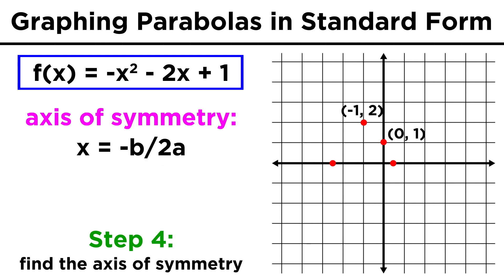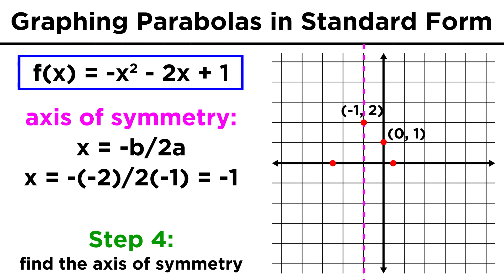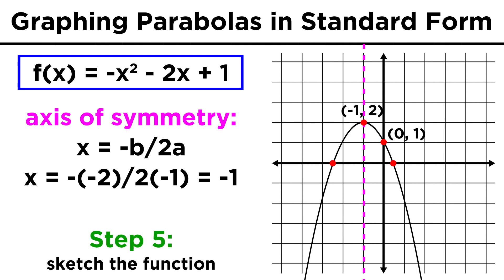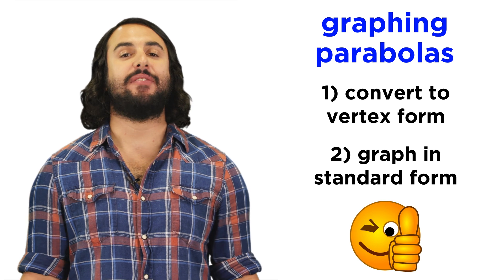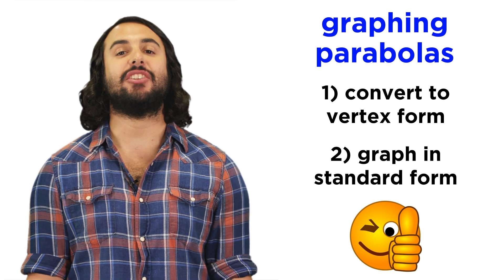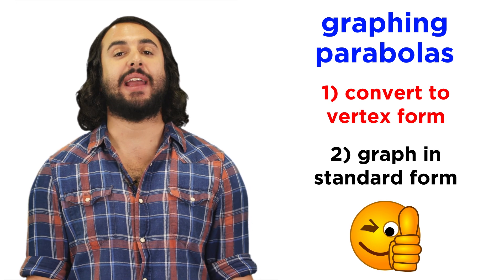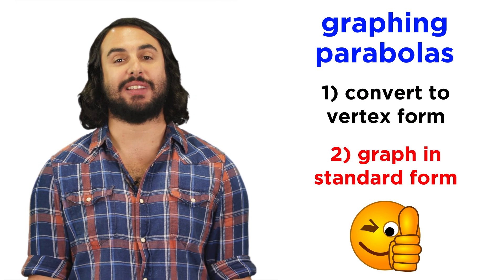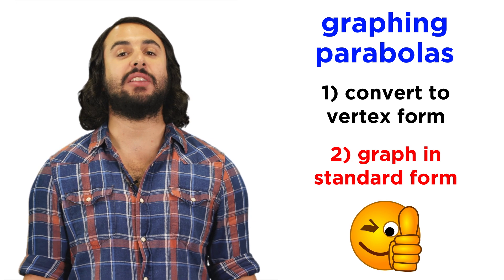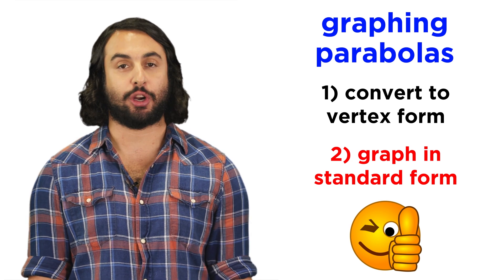Lastly, we could find the axis of symmetry, which will be x equals negative b over two a, just to make sure everything looks right. So now we have the vertex, some intercepts, and a line, and that's all we really need to generate a reasonable sketch of this function. We now have a variety of ways to graph parabolas — not just the easy kind. We can graph parabolas in vertex form by applying transformations, or graph parabolas in standard form by completing the square or finding various points on the curve.